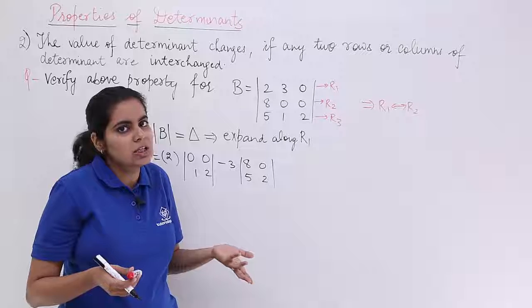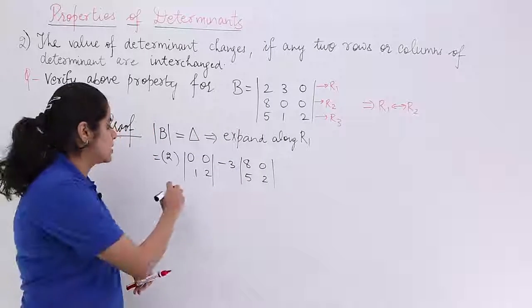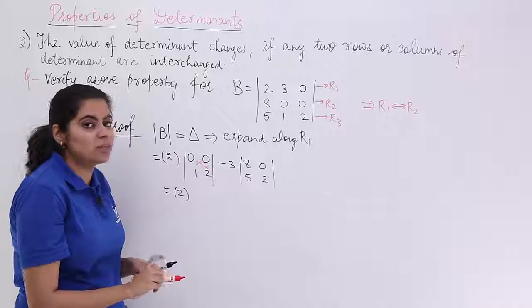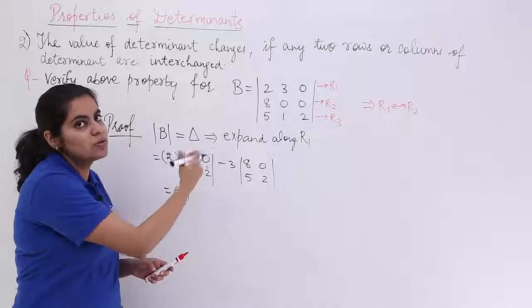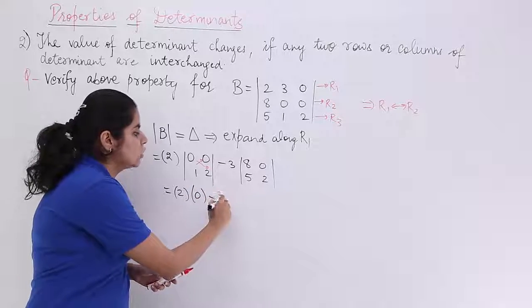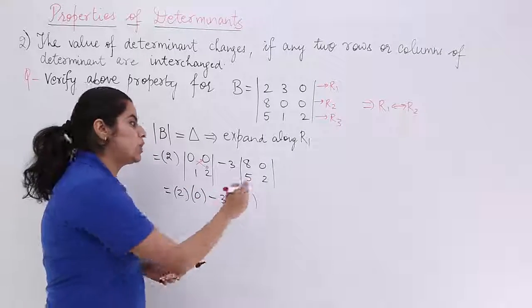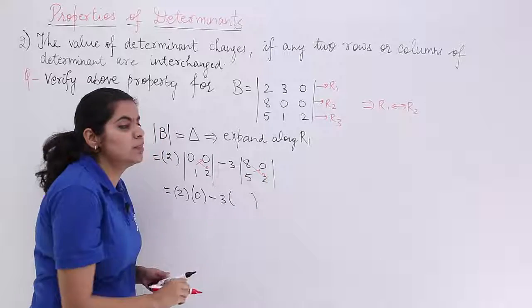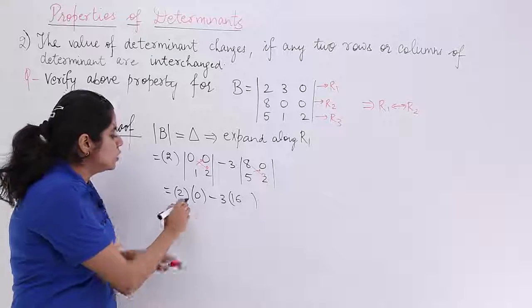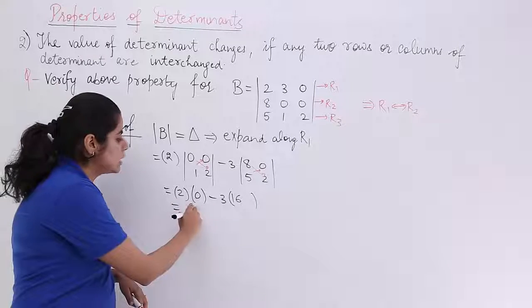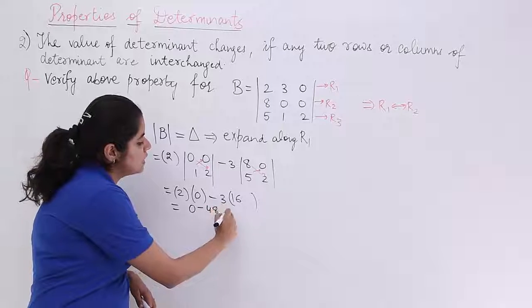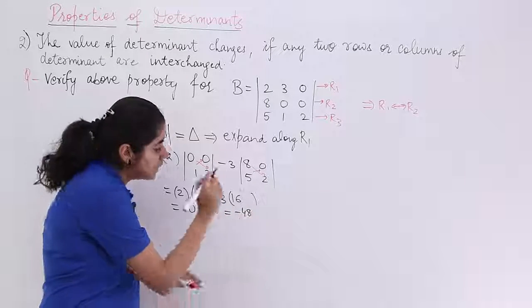Since 0 times something is 0, we ignore that last term. We have 2 outside: cross-multiplying gives 0×2 = 0 and 0×1 = 0, so that is 0. Then minus 3 outside: cross-multiplying 8×2 = 16 minus 5×0 = 0, giving 16. So minus 3 times 16 = minus 48. The answer is minus 48.